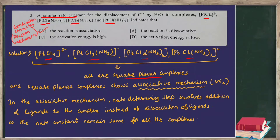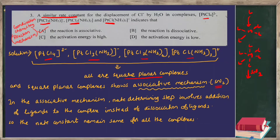All those complexes — PtCl₄²⁻, PtCl₃(NH₃)⁻, PtCl₂(NH₃)₂, and PtCl(NH₃)₃⁺ — are square planar complexes. Square planar complexes show an associative mechanism, that is SN2, because there is vacancy around the metal and not much steric hindrance, so they can accept a new ligand. In contrast, octahedral complexes have steric crowding and must first undergo dissociation (SN1). Since all these are square planar, they follow the associative mechanism, and in SN2 the rate-determining step involves addition of the incoming ligand.